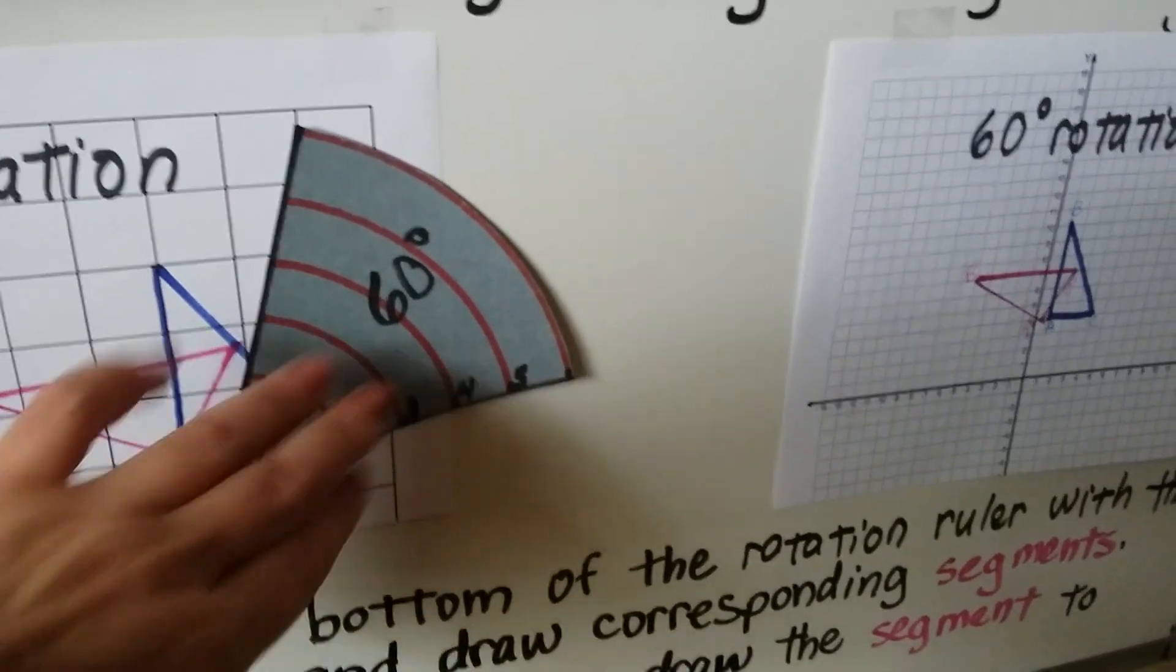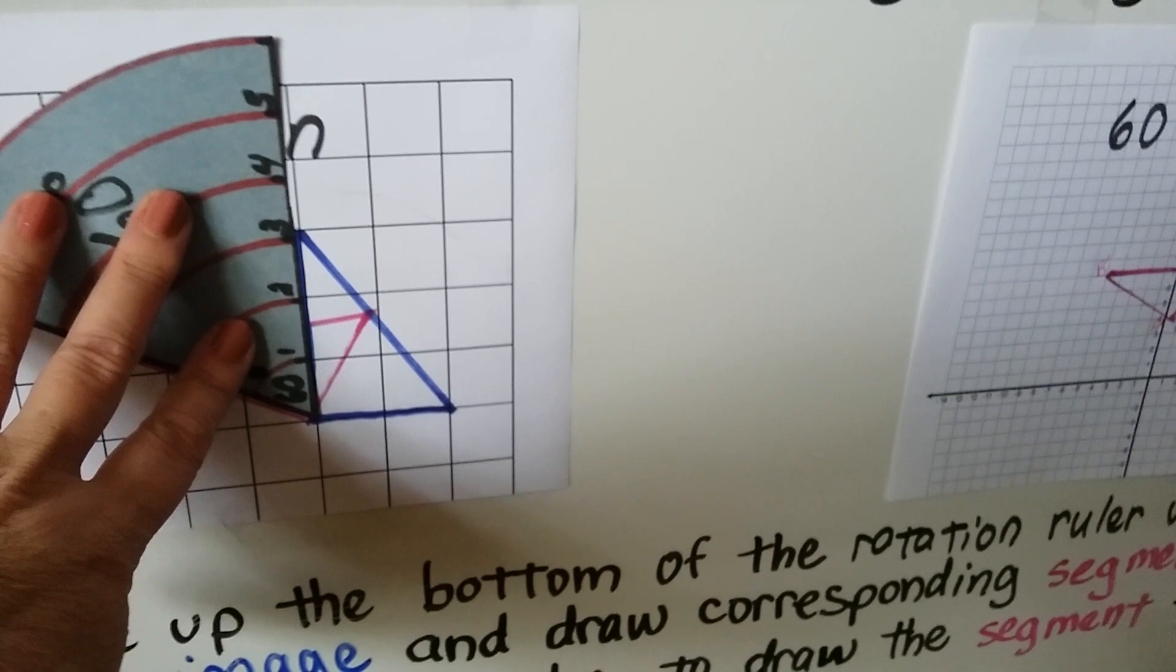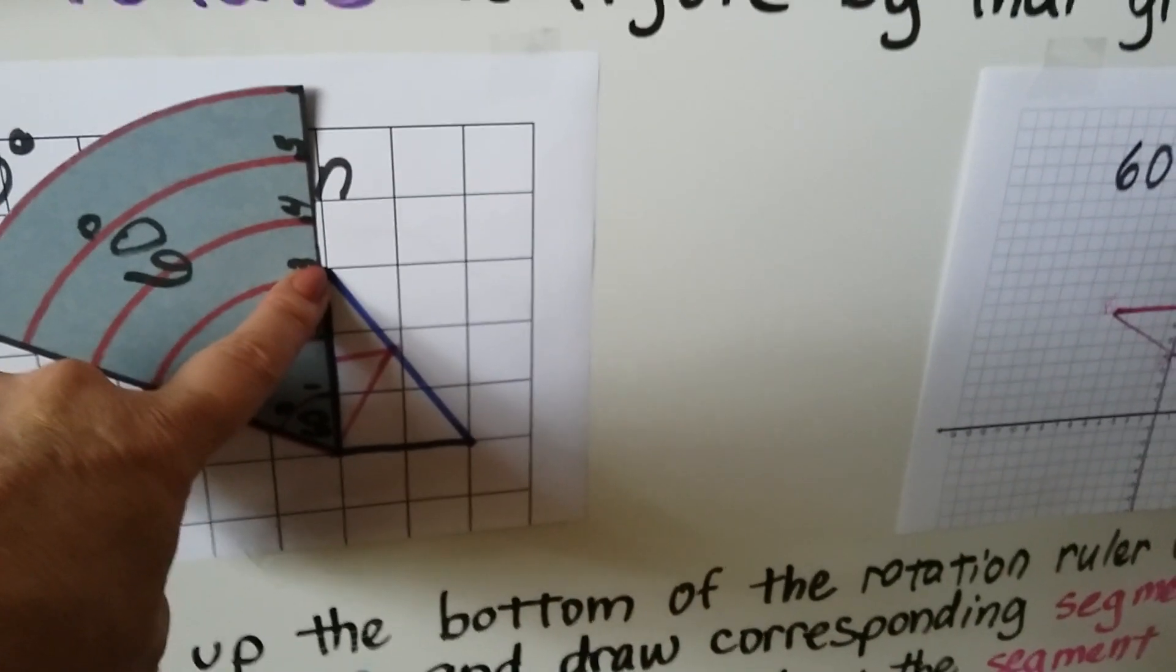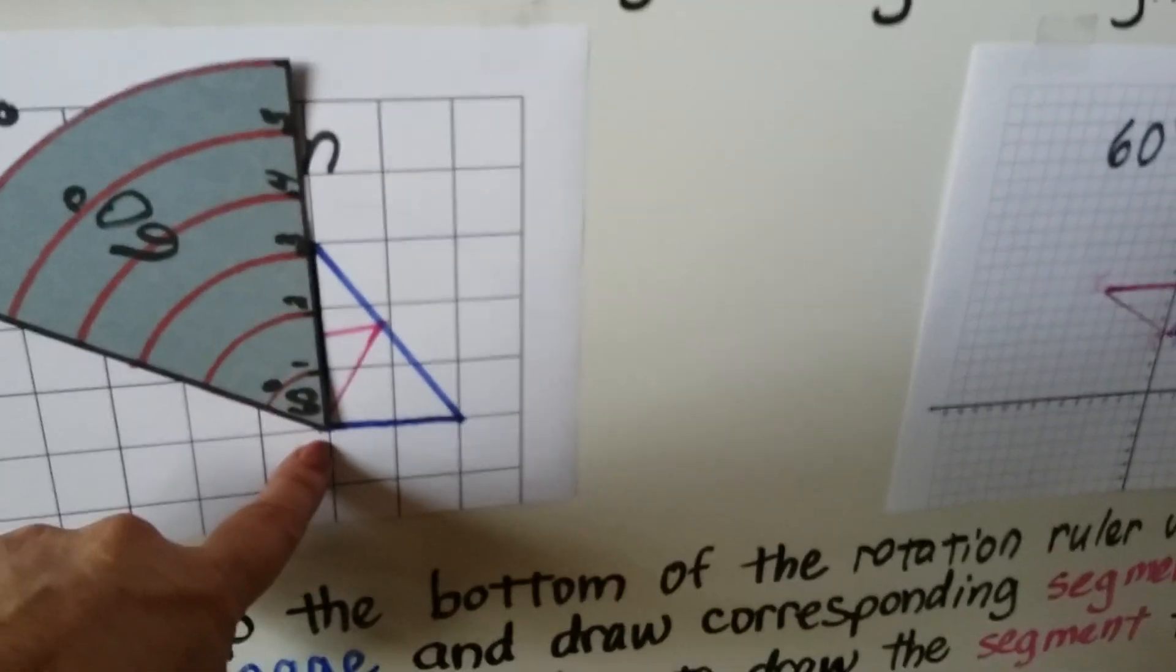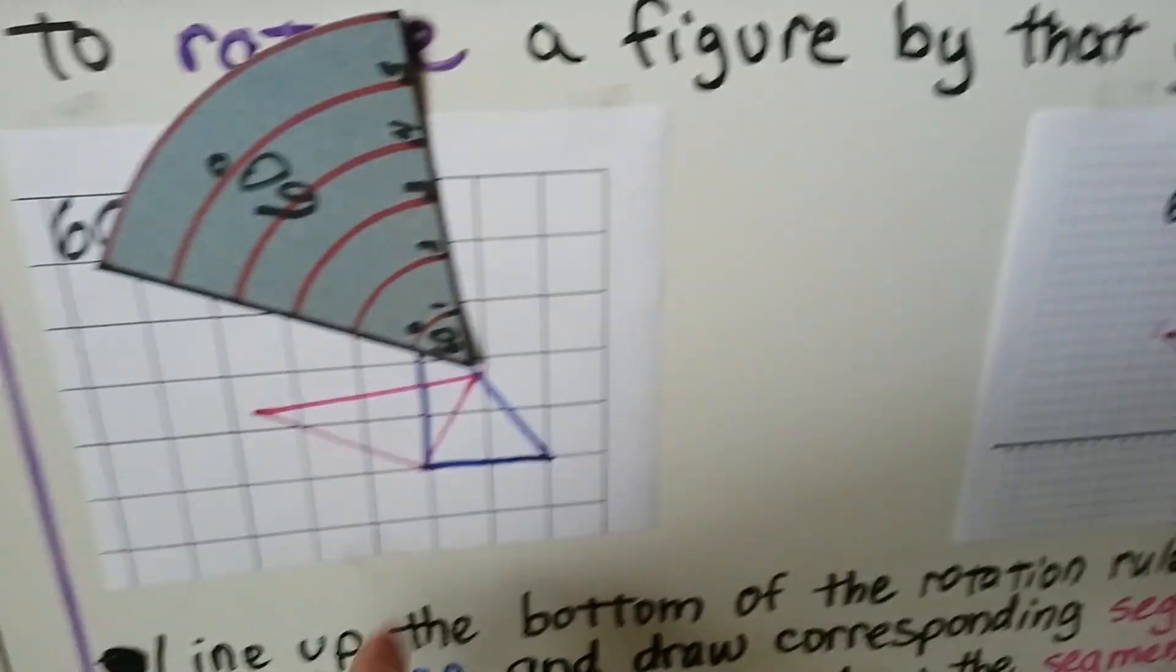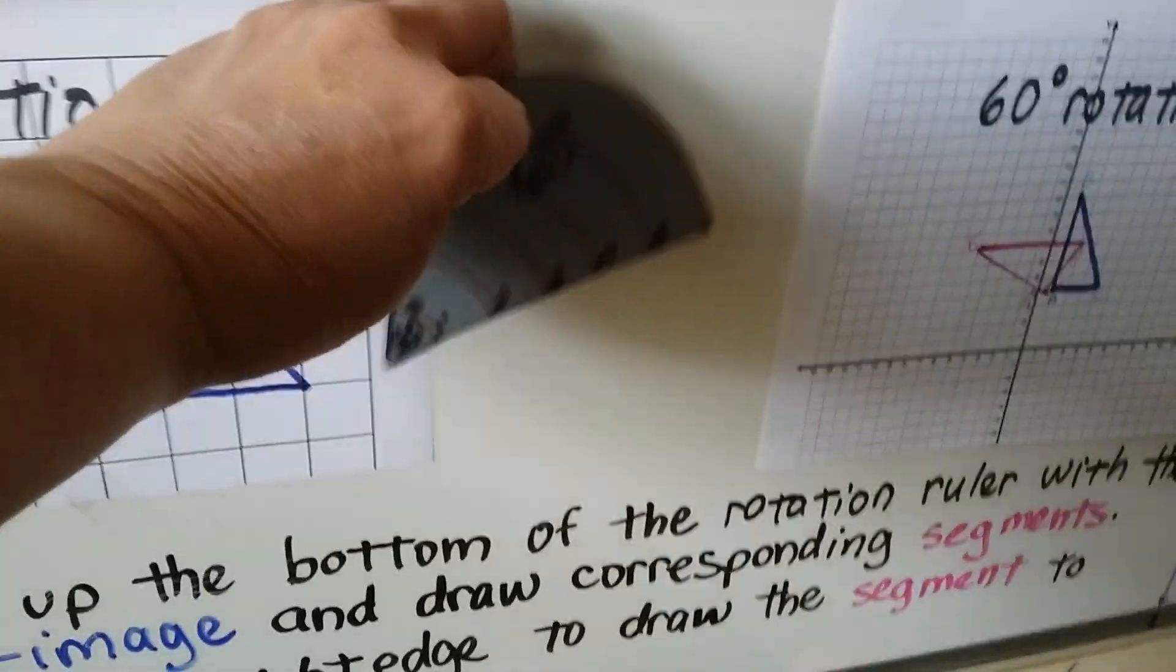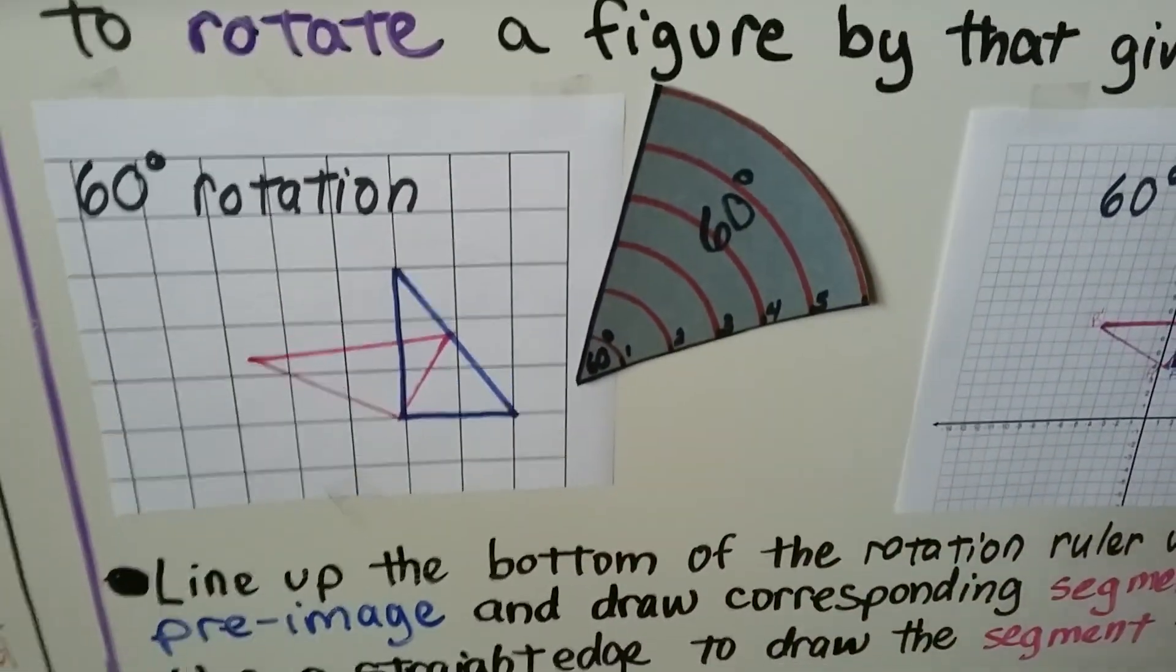Now to rotate this segment, I line up my 60 degrees right here and we see that it's three units, so I'm going to make a pink line going three units to right here. So now I have this one. Then all we have to do is connect the segments and we've got our triangle rotated 60 degrees counterclockwise.